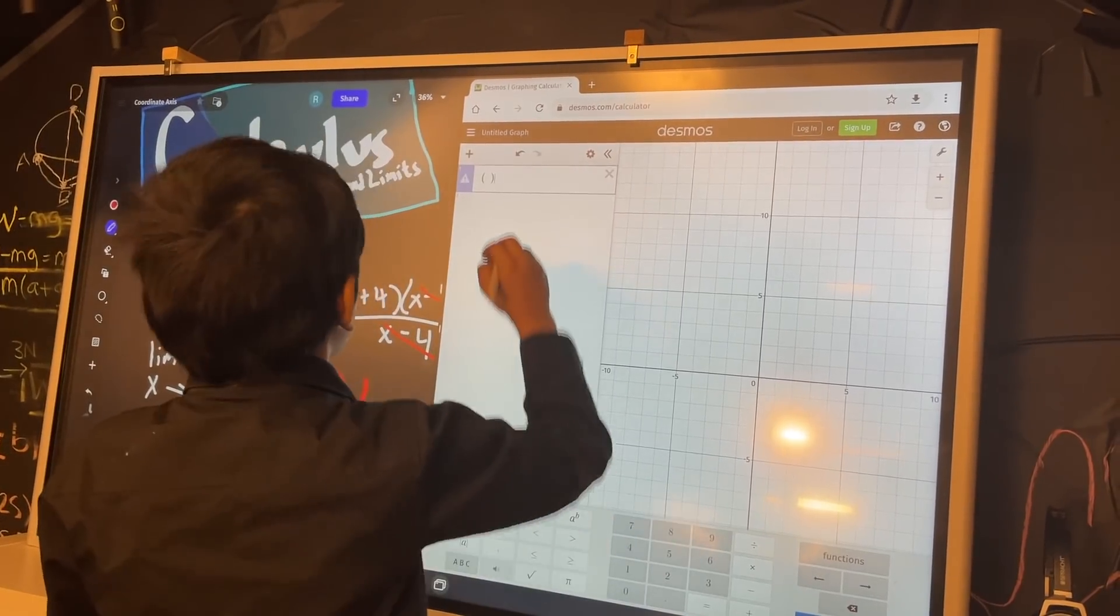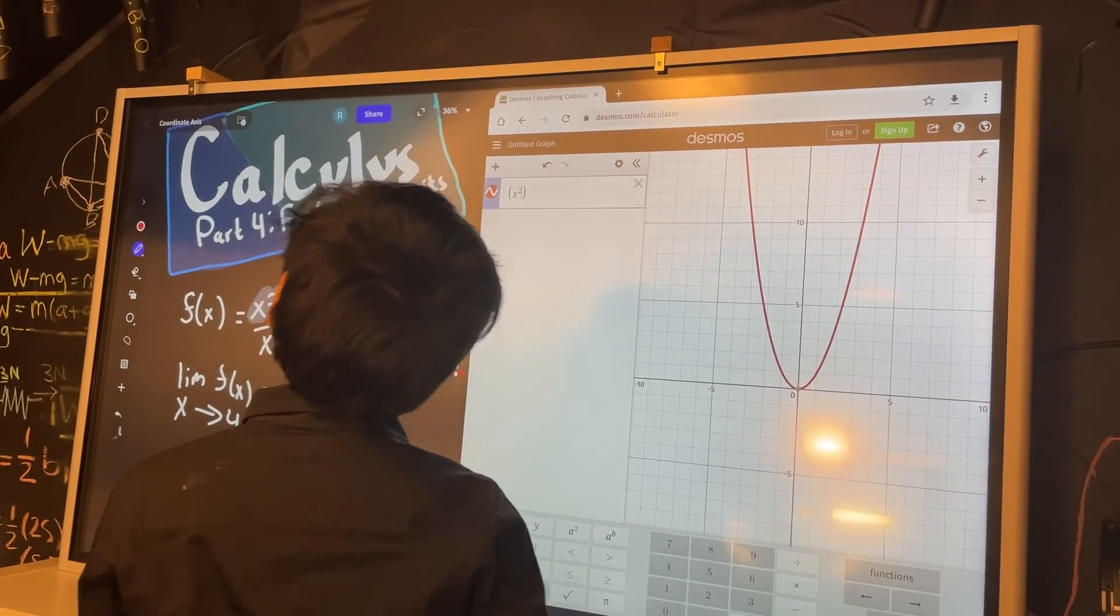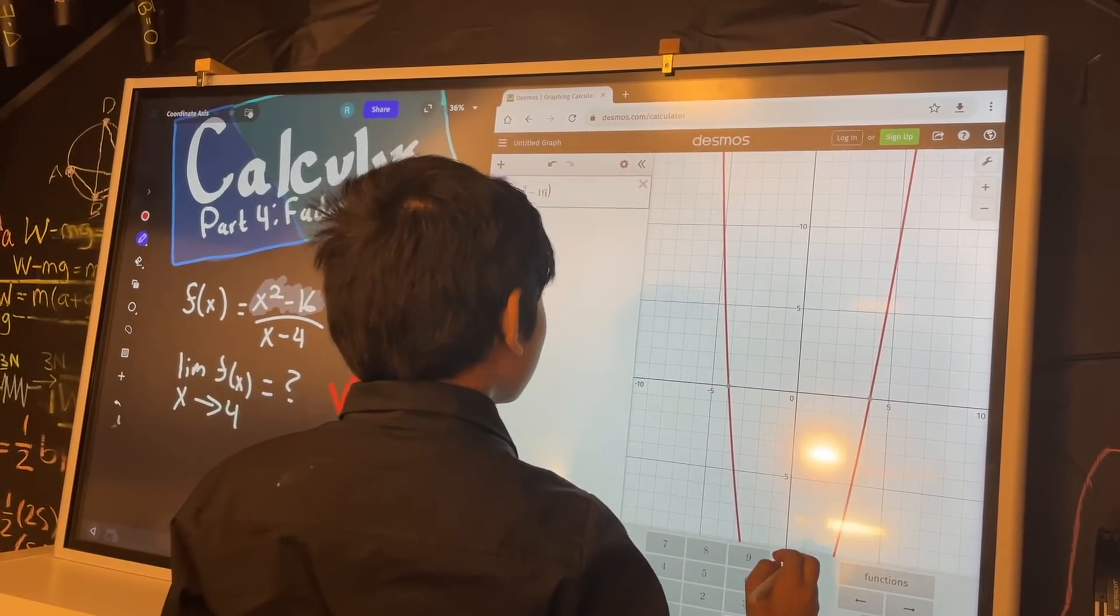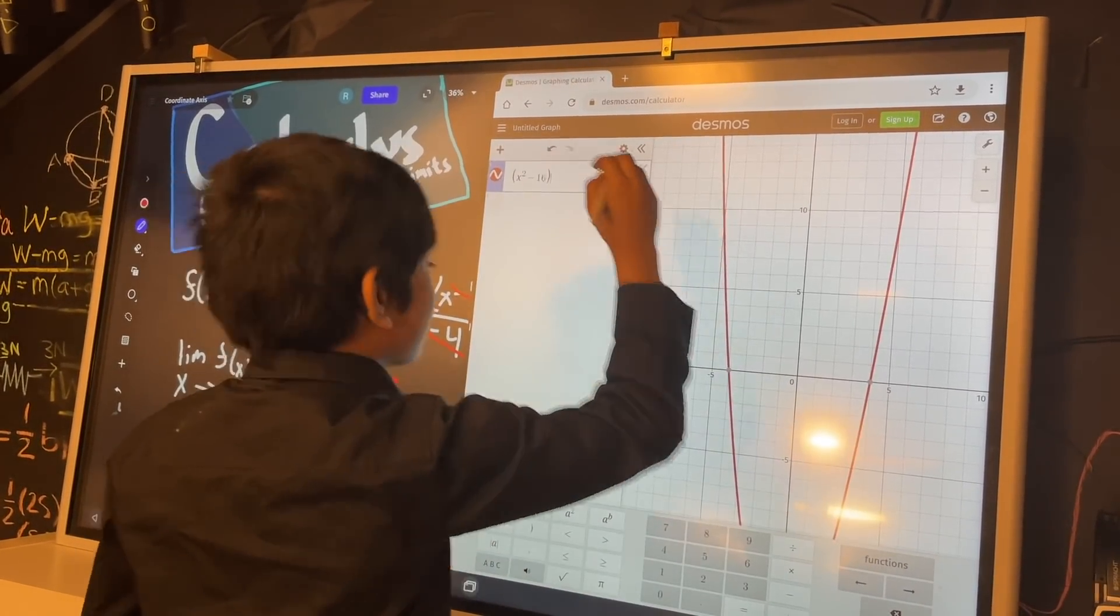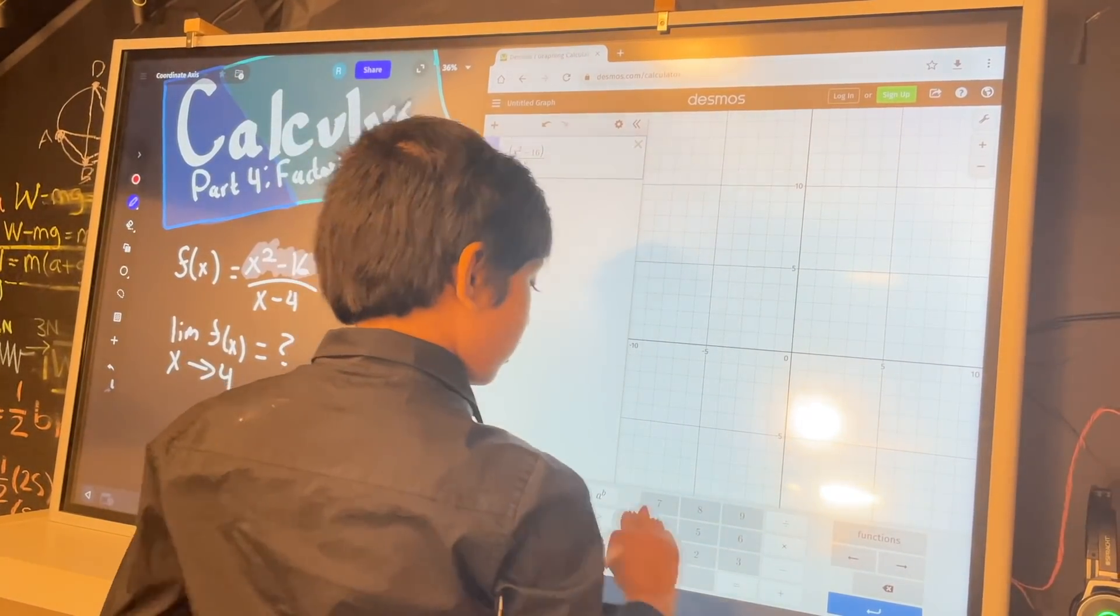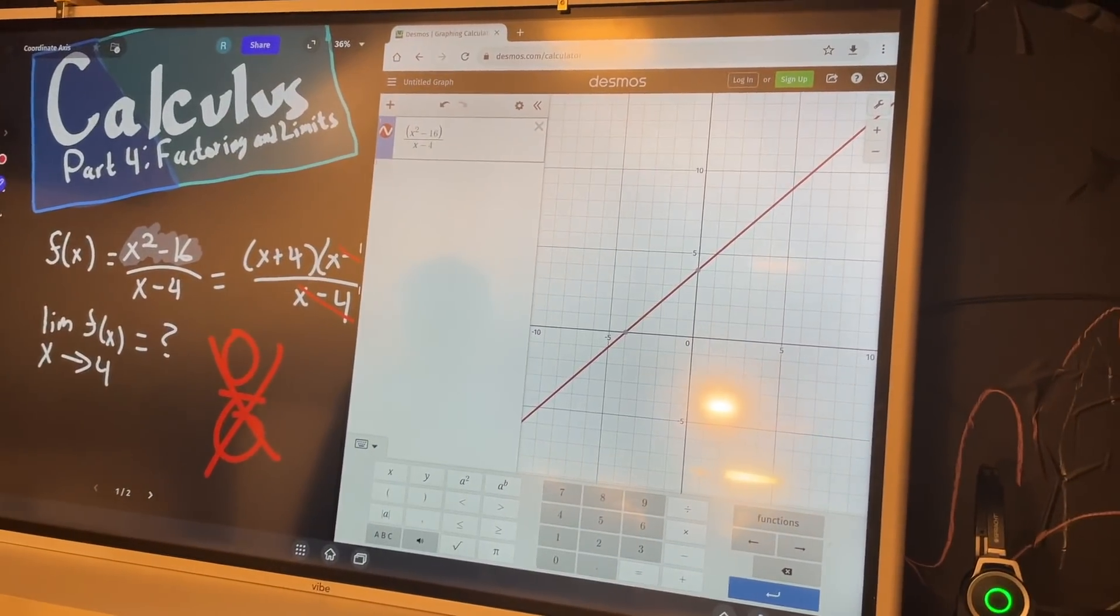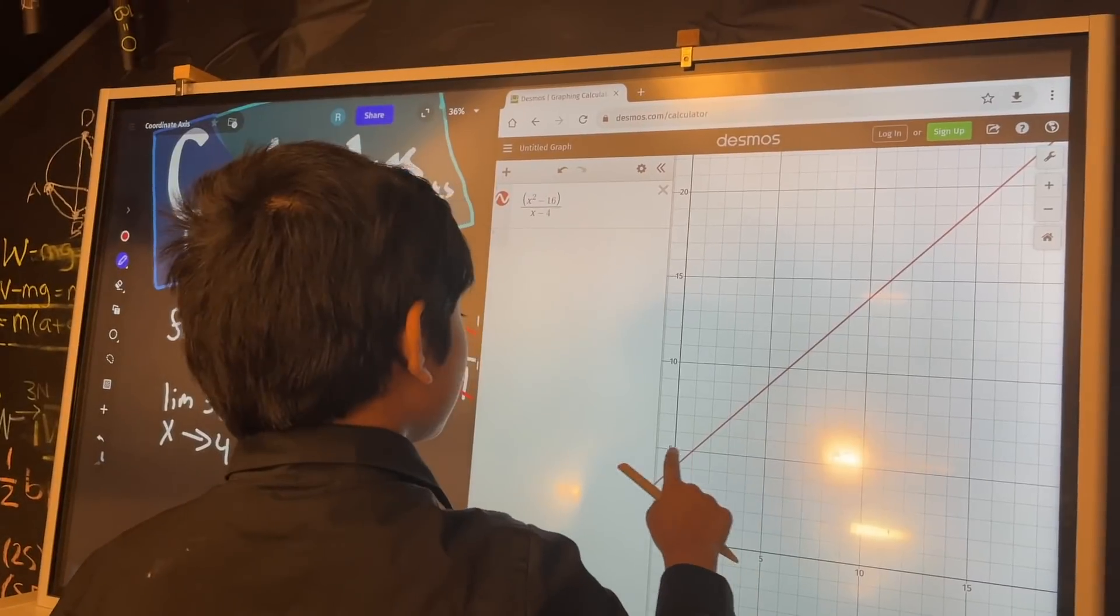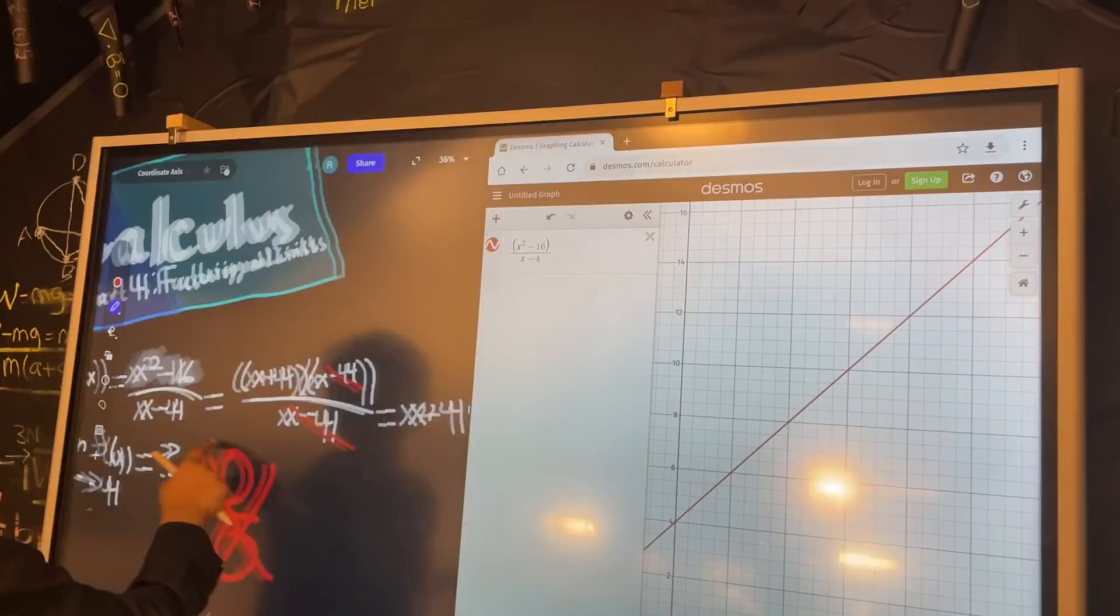So x squared minus 16—oh, oopsies—over x minus 16. There we go. And it gives a line, specifically similar to the one I drew. See, these match up, don't they?